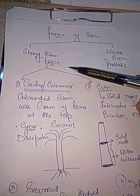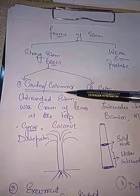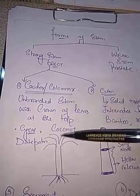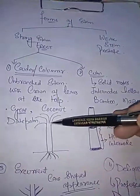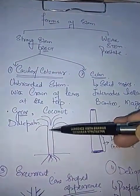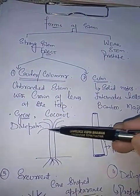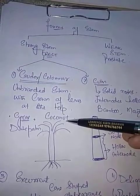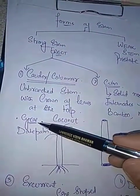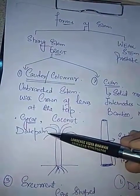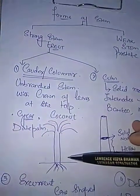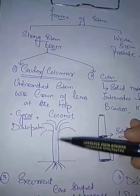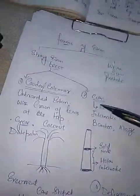Let's talk about strong or erect stems. One type of erect stem is caudex or columnar. This is a type of stem in which the stem is unbranched but there is a crown of leaves at the top. Examples include coconut tree, cycad which is a gymnosperm, and date palm. In all of these trees the main axis is unbranched with a crown of leaves at the top.